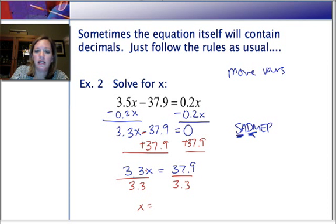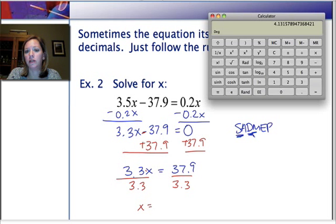And, hmm, I'm not entirely sure what 37.9 divided by 3.3 is. I could get an idea. For example, I know 36 divided by 9 is 12. So it's probably somewhere around 12. But I'm totally okay with you guys using your calculator to do this decimal division. Okay? So we'll pull up our calculator again, clear it out. And then we'll do 37.9 divided by 3.3.